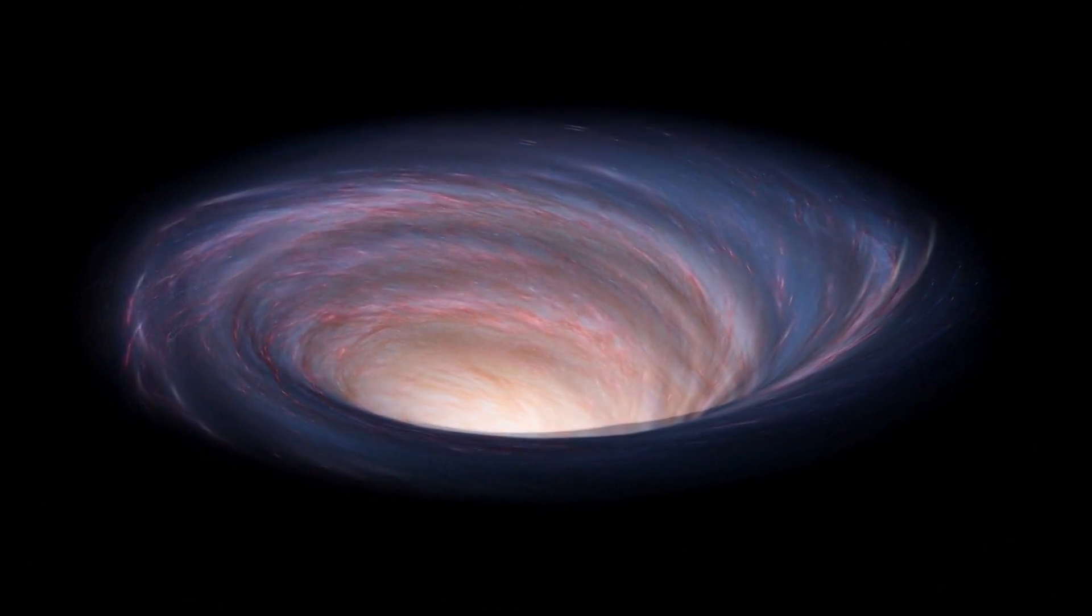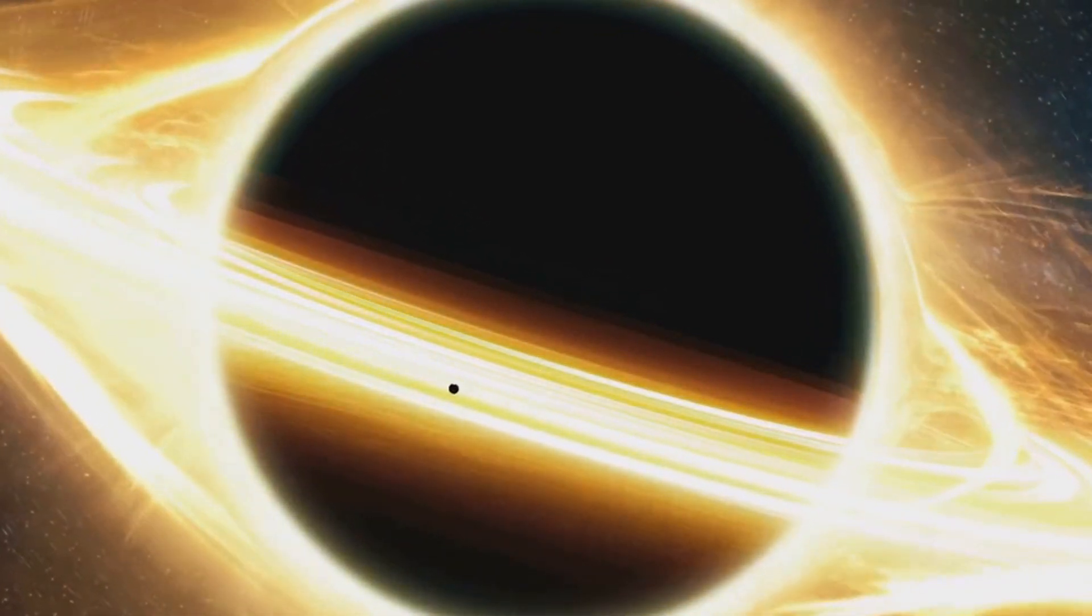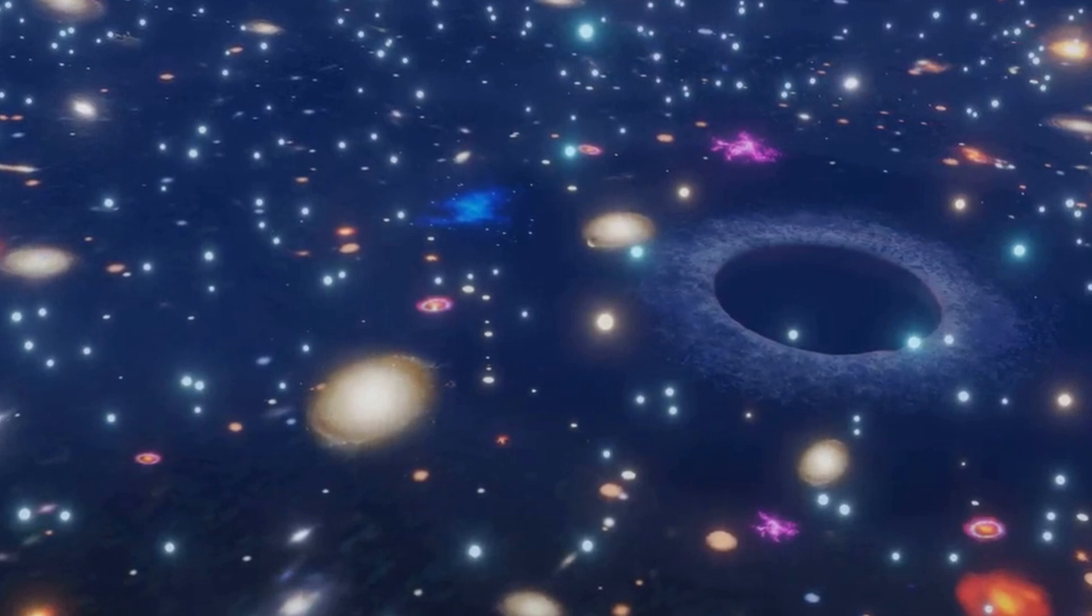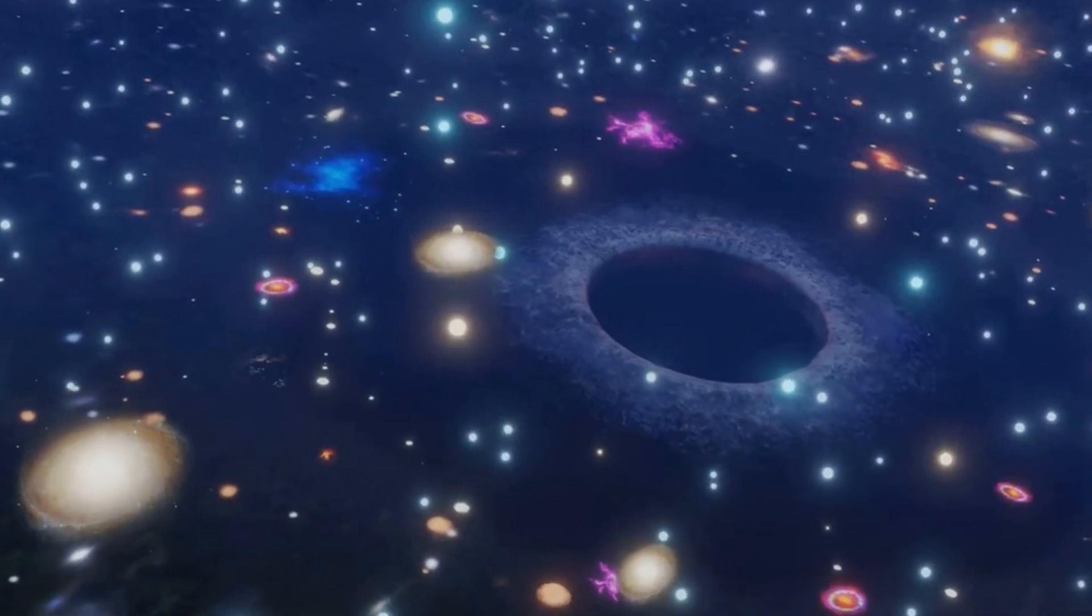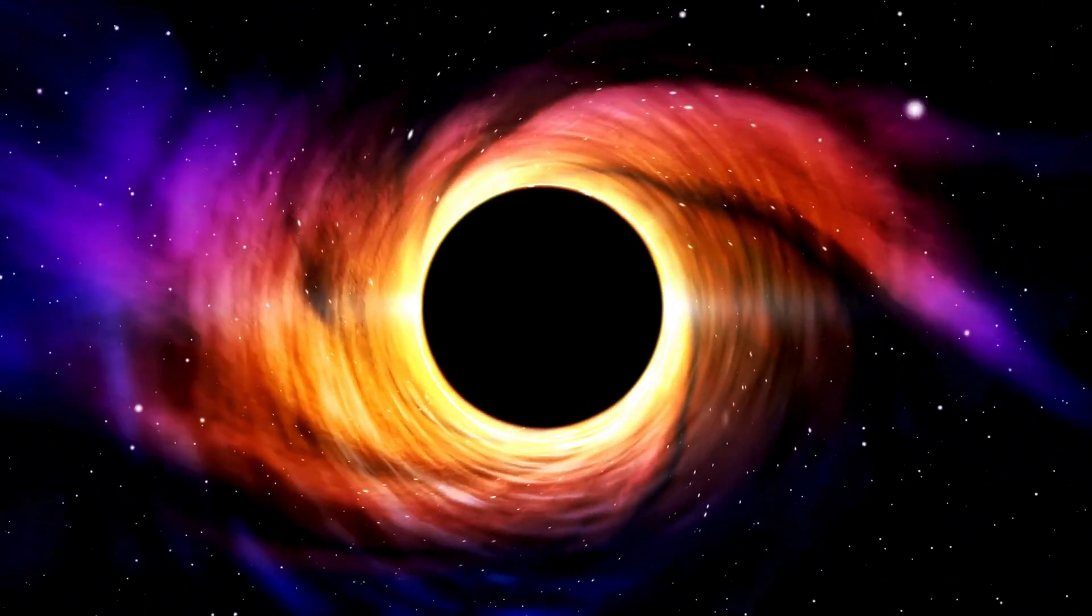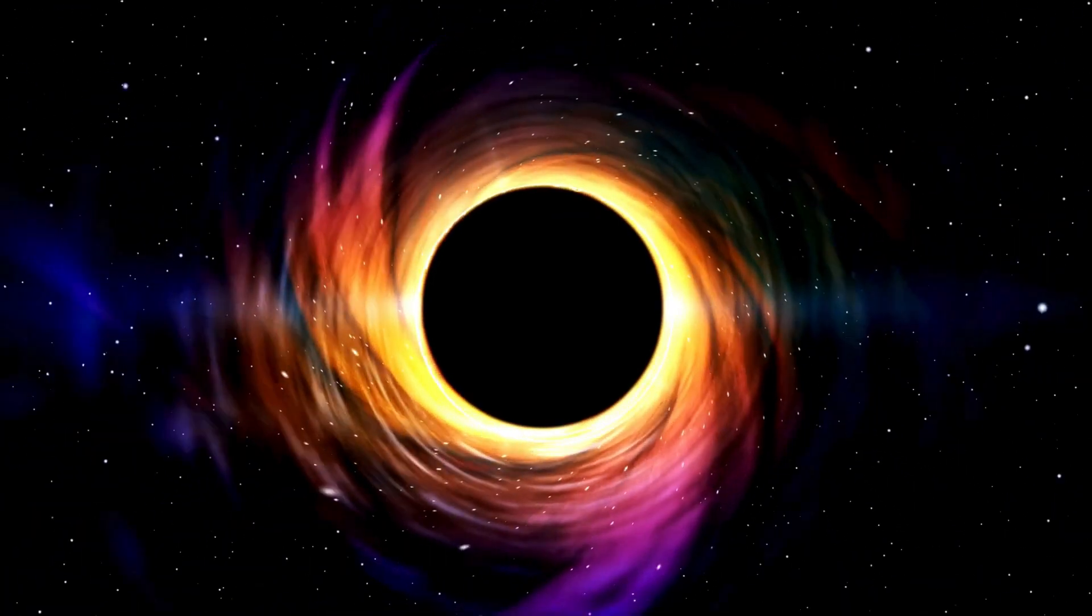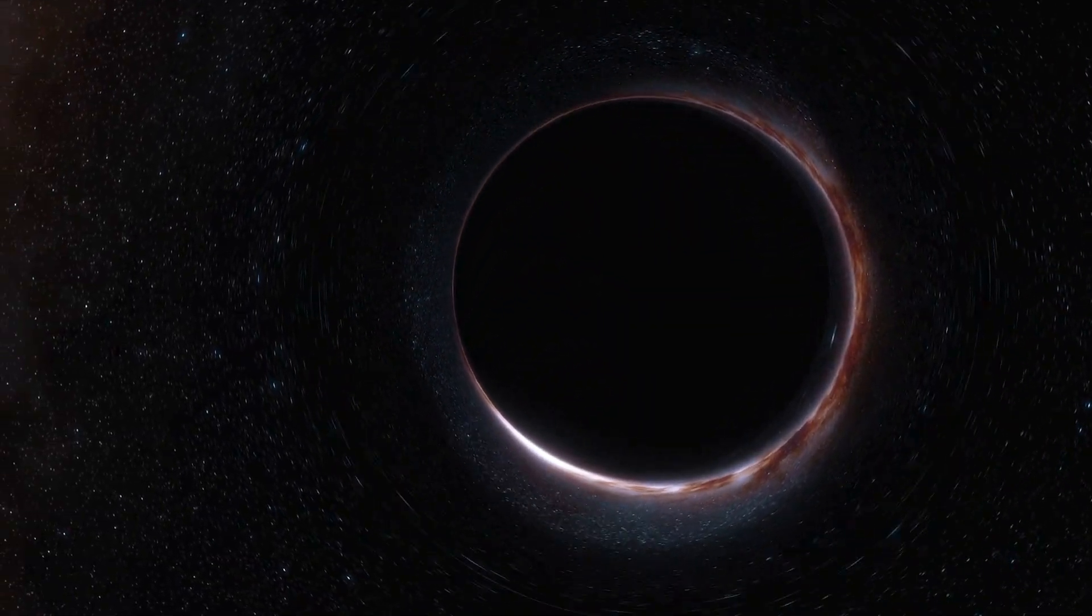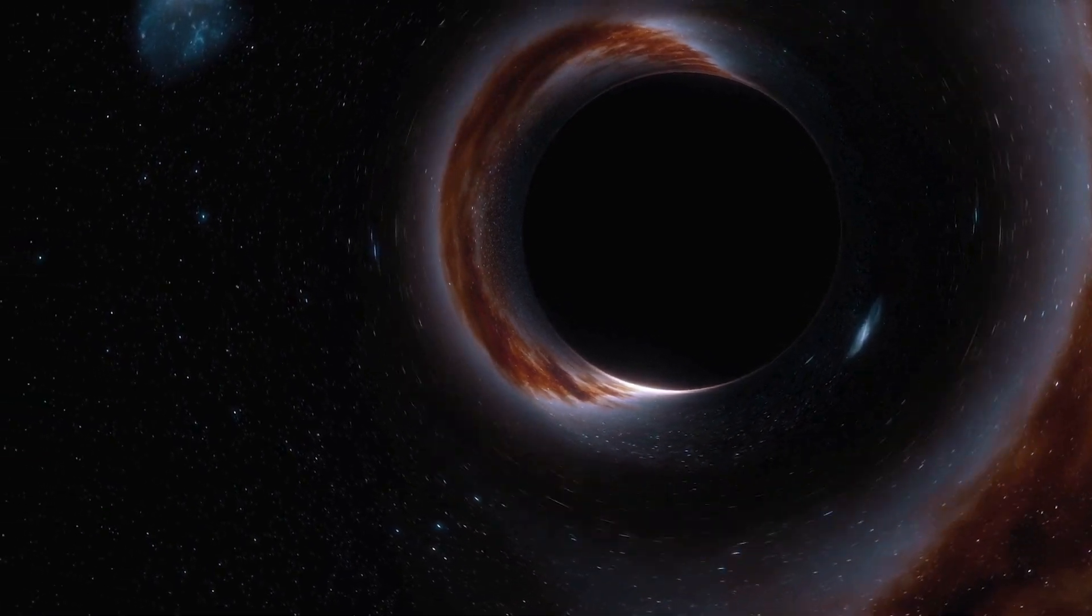For a black hole to pose a threat to Earth, it would need to be very close, well within our solar system. But even the concept of close, in astronomical terms, is mind-boggling. The nearest star to our solar system, Proxima Centauri, is over four light-years away. That's about 25 trillion miles. Imagine a black hole within such a distance. It's a scenario that's beyond improbable. It's almost impossible. Moreover, black holes are not cosmic vacuum cleaners. They don't suck up everything in their vicinity. You could replace our Sun with a black hole of the same mass, and the Earth would continue its orbit unperturbed. The only difference? We would be in eternal darkness.